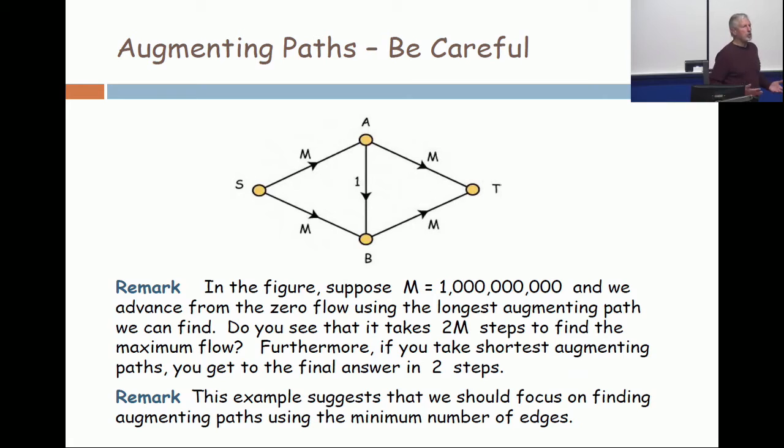What's the longest augmenting path that you can find? The longest one goes from S to A, A to B, and B to T. The spare capacity on the edge SA: it has flow zero, capacity is M, so the spare capacity is M. Going across the middle from A to B, the flow is zero, the capacity is one. So what's the spare capacity? One.